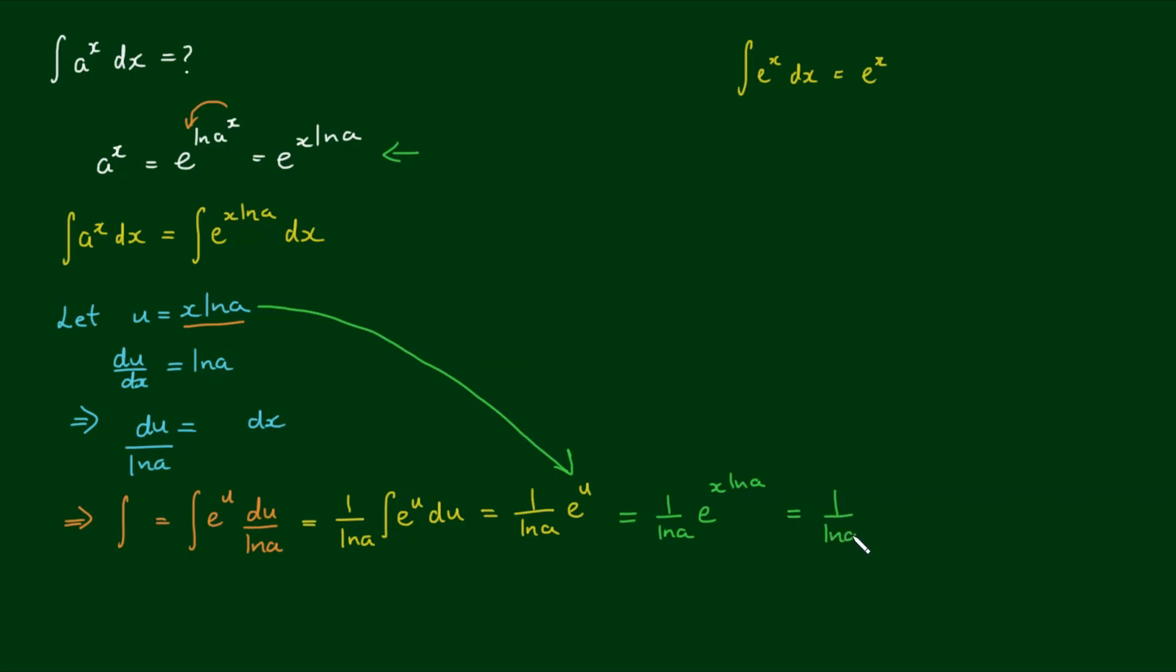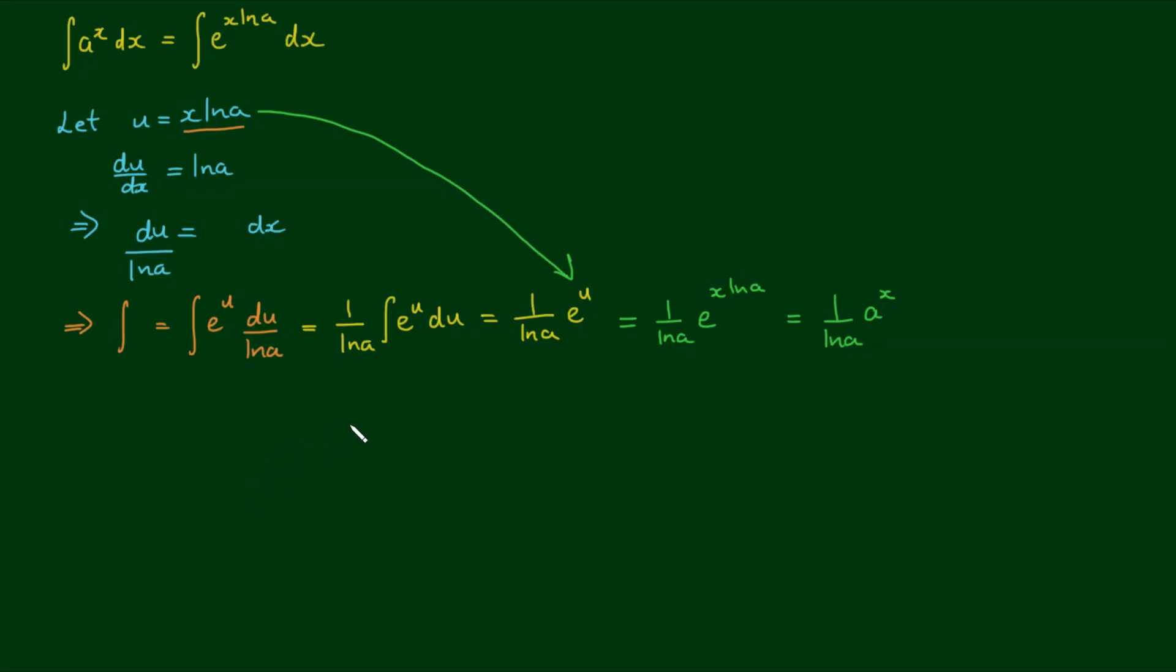So it equals 1 on log of a, copy that, by a to the x. So to complete, I say the integral of a to the power of x dx is equal to a to the power of x on the natural log of a plus a integration constant c.